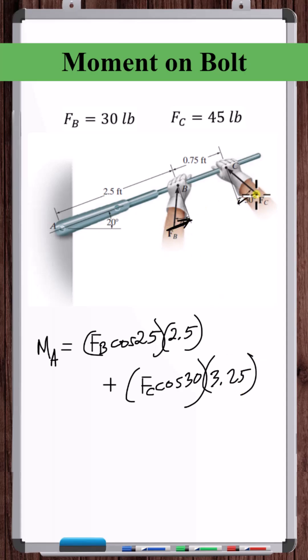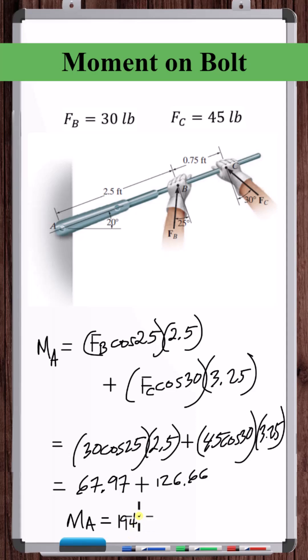Note these components of the forces are in line with the bolt, so they produce no moment. So the moment on the bolt is 194.6 pounds feet in the counterclockwise direction.